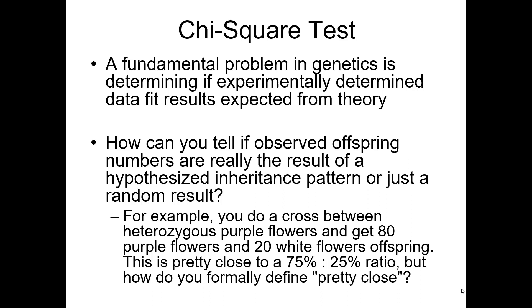You get 80 purple flowers and 20 white flowers. That's pretty close to a 75%-25% ratio that you'd expect from a double heterozygous cross. But how do you define pretty close? How do you tell if your results are close enough that you can believe your hypothesis? Or if it's just something weird going on, too far off. Maybe you have the wrong hypothesis about how these things are inherited.